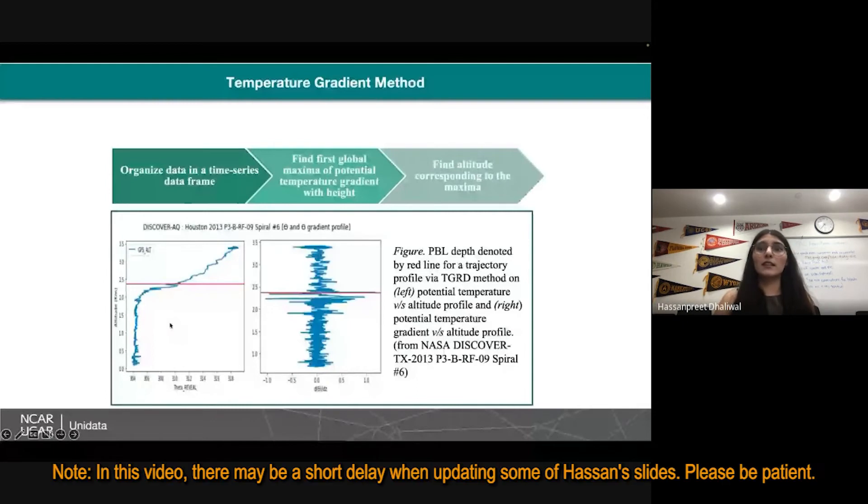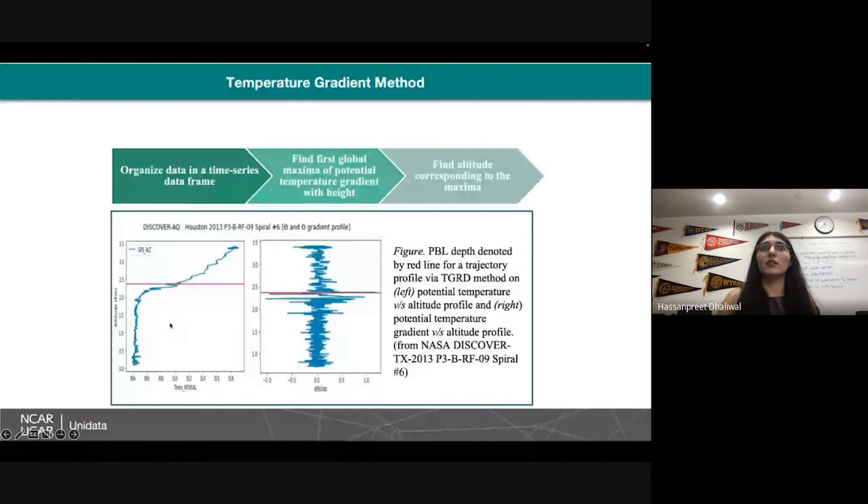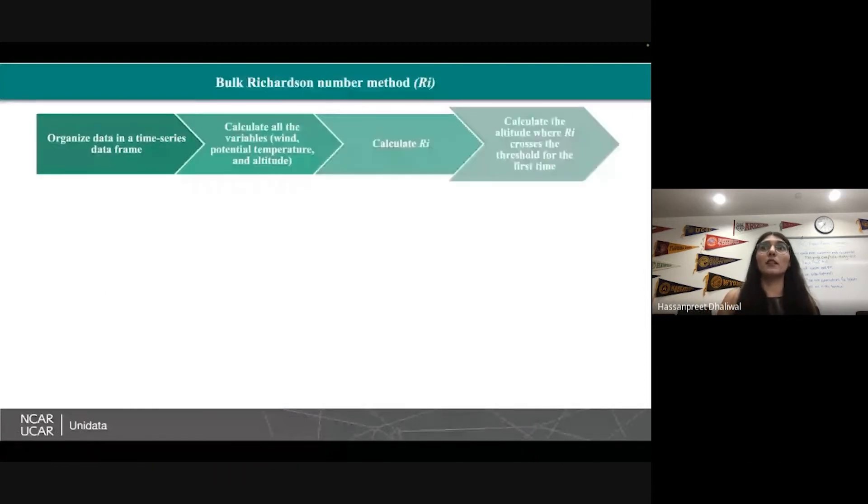The next one is bulk Richardson number method. The algorithm for this method was, first, the simple thing, you organize the data in a time series data frame. Then you calculate all the variables. For bulk Richardson number, we also need the wind parameters because it essentially quantifies turbulence and you need wind for that. So it cannot be used for any data where you don't have wind parameters available. Then you calculate the Richardson number and then you calculate the altitude wherever the Richardson number crosses this particular threshold. This particular function is taking the value of a data frame, any pandas data frame, and then it has a threshold which the user will specify according to their literature for that particular location. It calculates the horizontal and vertical components of wind, then it calculates Richardson number, and at the first point wherever the Richardson number passes the threshold is your boundary layer value.